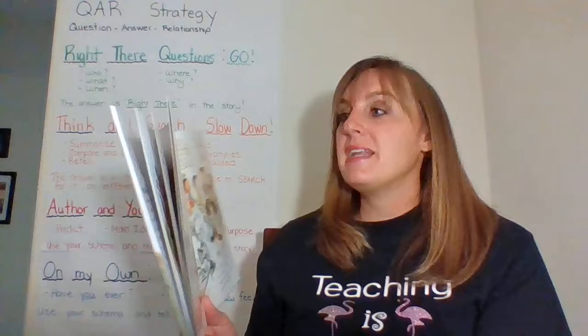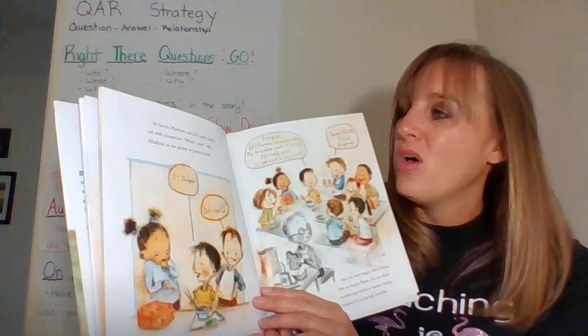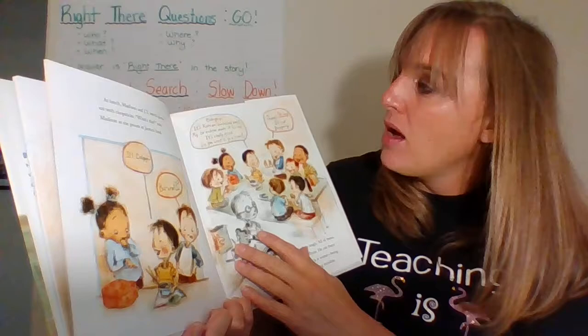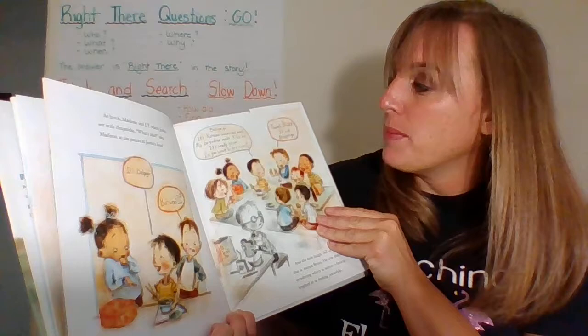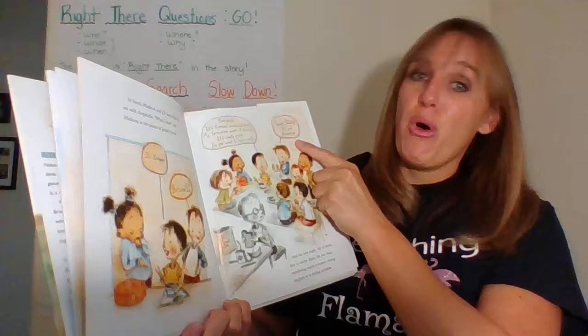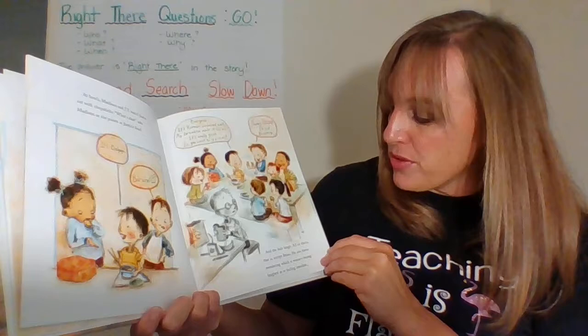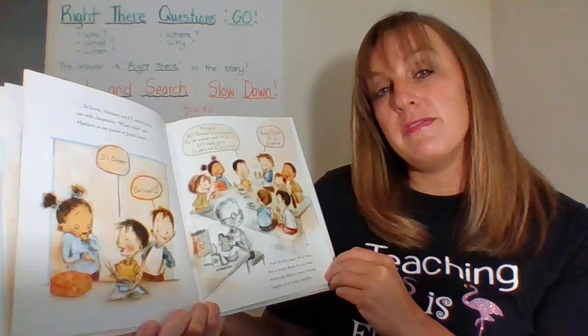At lunch, Madison and JT watch Justin eat with chopsticks. 'What's that?' asks Madison, pointing at Justin's food. 'It's bulgogi — Korean barbecued beef. My grandma made it for me. It's really good. Do you want to try some?' 'There's no way I eat bulgogi,' and the kids laugh — all of them, except Brian. He sits there wondering which is worse: being laughed at, or feeling invisible.